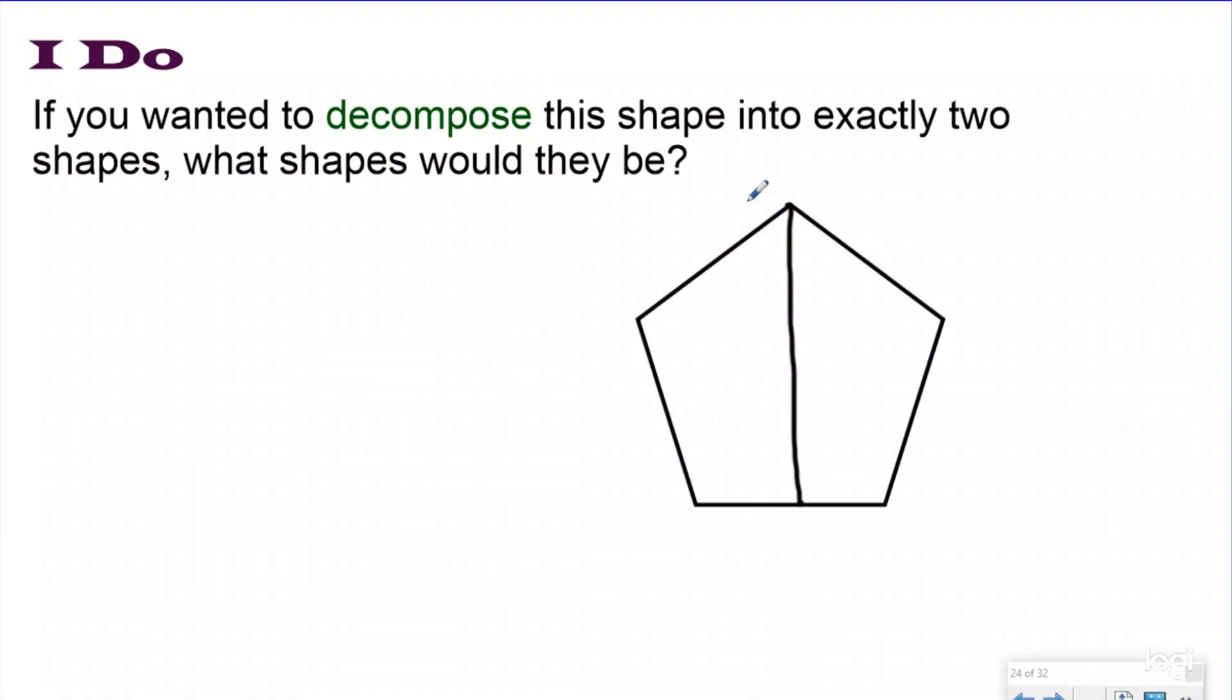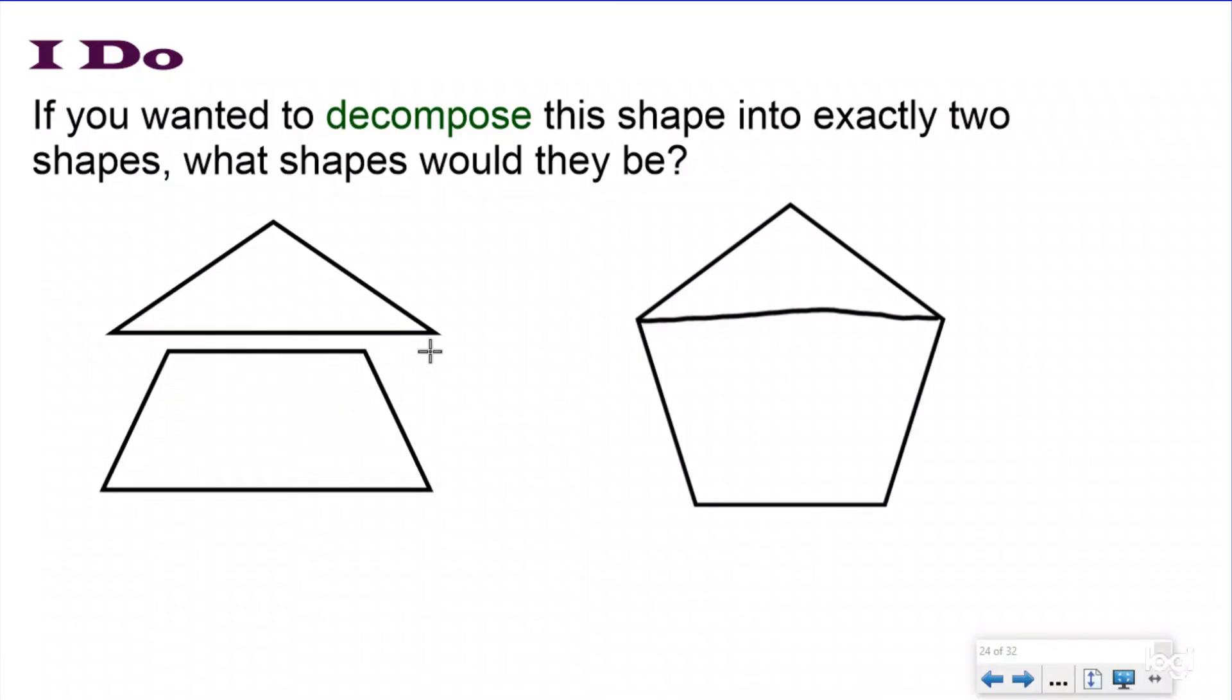But if I split it going the other way in half from vertex to vertex, I see now that I have a triangle, and even though this is upside down, I see that this is a trapezoid. I can decompose this into the triangle that was on top and the trapezoid that was on the bottom. Just because it was flipped upside down doesn't mean it's not a trapezoid. So I can split this pentagon into a triangle and a trapezoid.